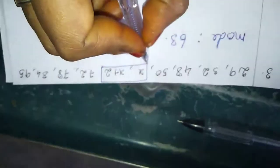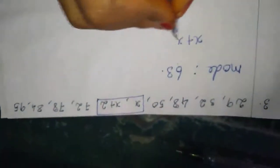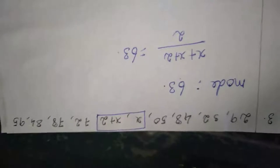Third sum. The following observations have been arranged in ascending order. If the median of data is 63, find the value of x. Since it's arranged in ascending order, count the numbers: 1, 2, 3, 4, 5, 6, 7, 8, 9, 10 numbers. For the center 2 numbers, we add and divide by 2. So median is x plus x plus 2, divided by 2, equals 63.